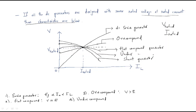The last generator is the differential compound generator. When load current increases, the terminal voltage fully decreases. Using these characteristics, we can distinguish these generators operated at the same rated voltage and current, and apply them to different applications accordingly.